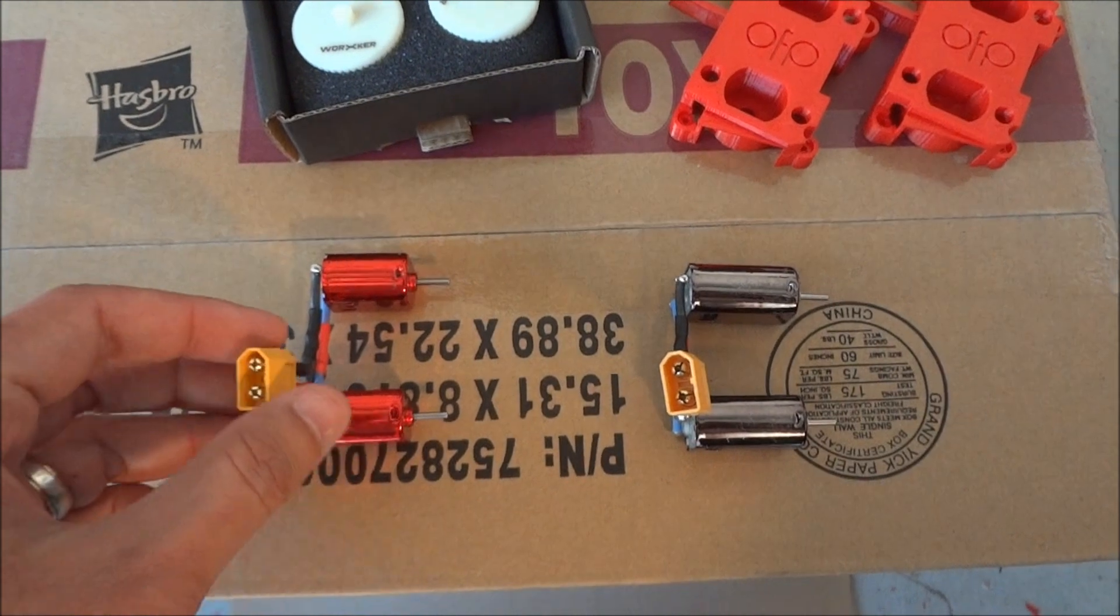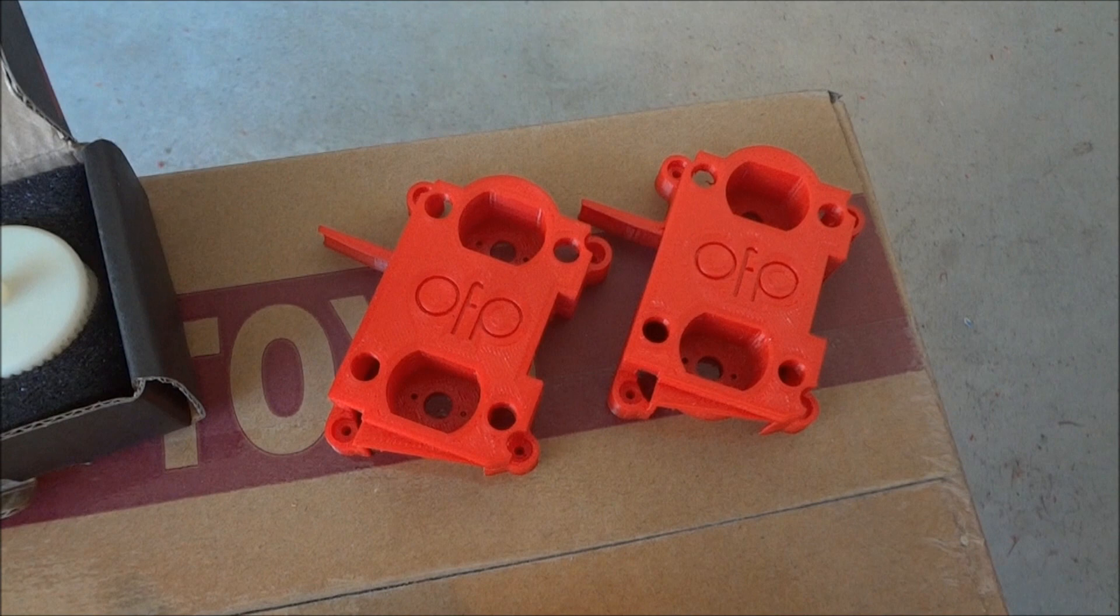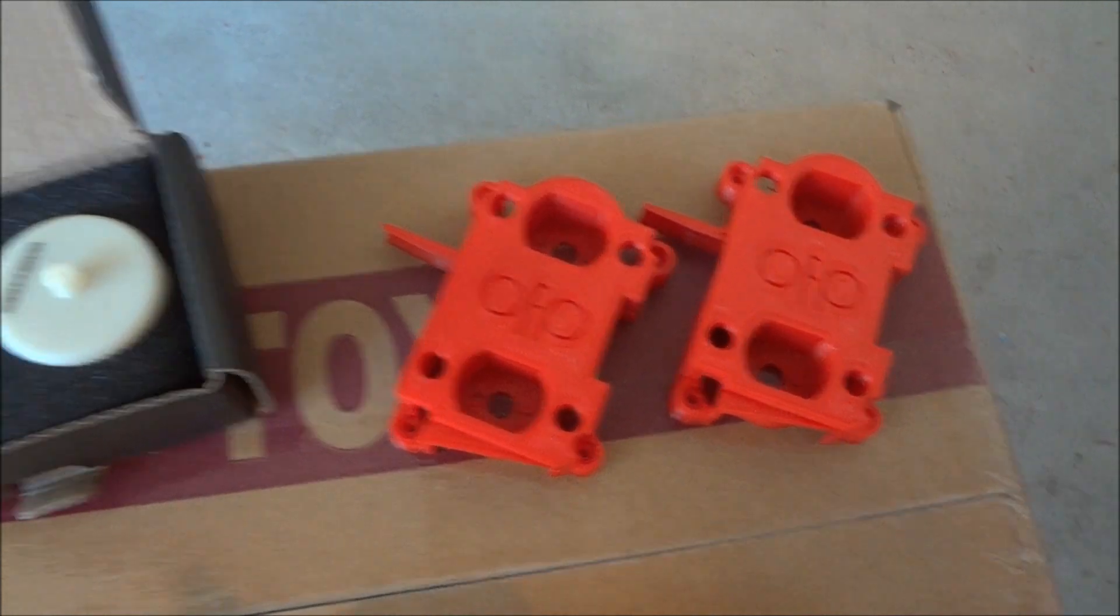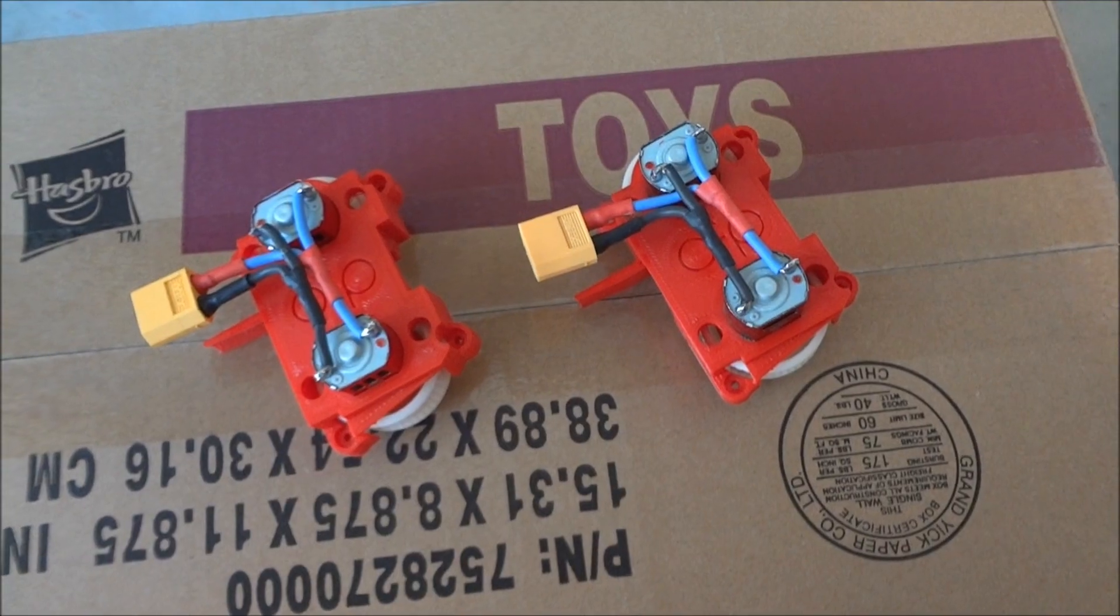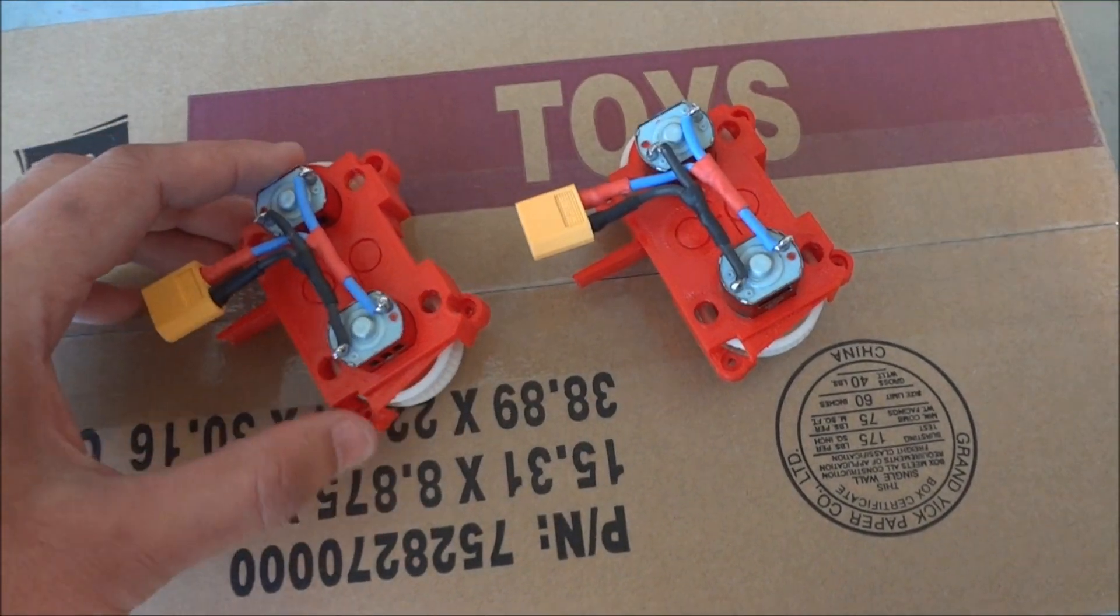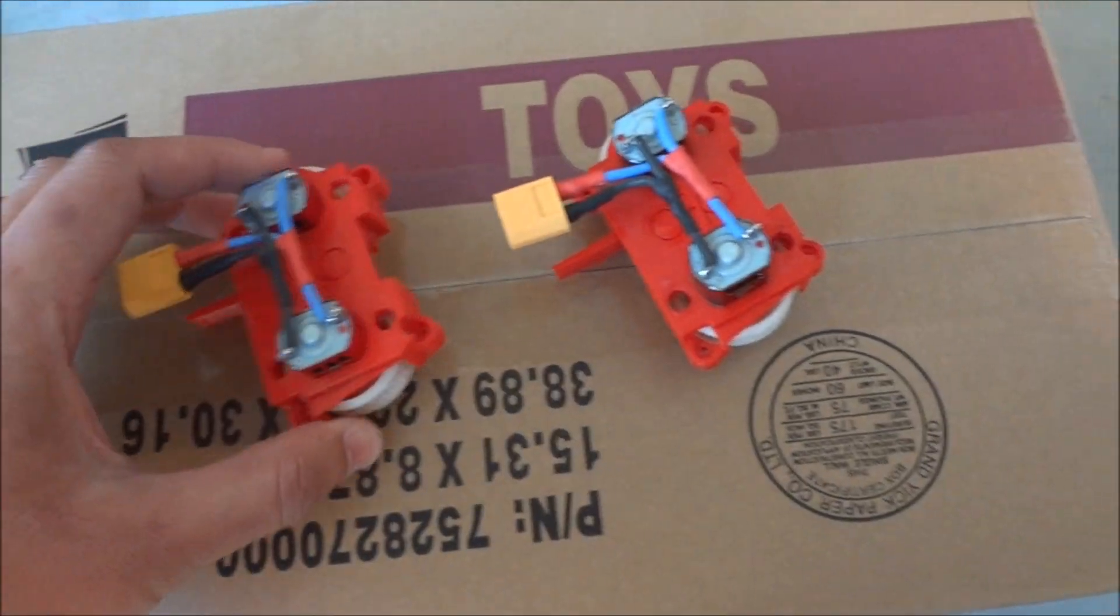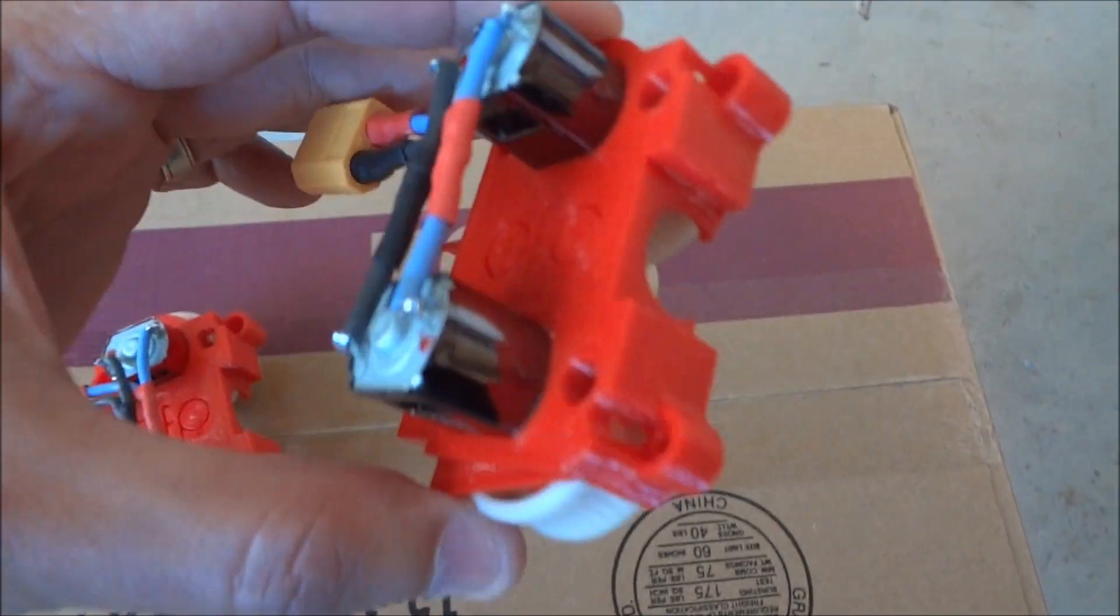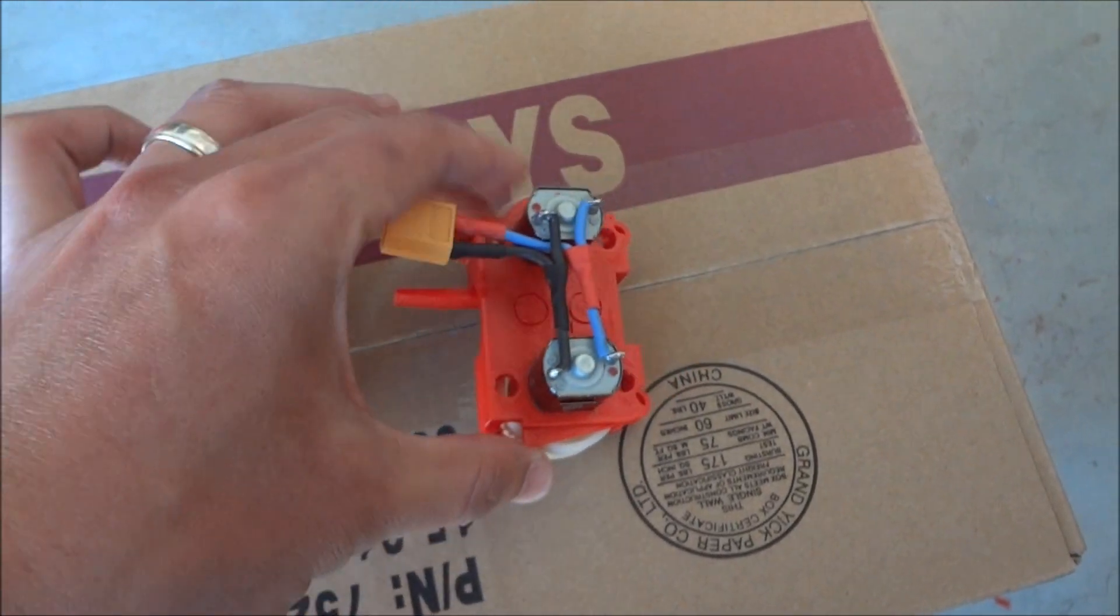So what we're going to do, we're going to install these motors into a 42.5mm OFP cage with some Worker ABS flywheels. Okay, so we've got our Neo Rhinos installed and our Neo Hellcats installed on an XT60 plug so we can plug it straight in the blaster.